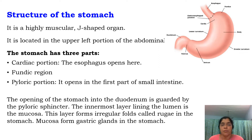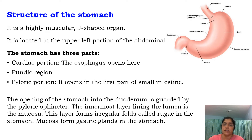The opening of the stomach into the duodenum is guarded by the pyloric sphincter. The innermost layer lining the lumen is the mucosa. This layer forms irregular folds called rugae in the stomach.